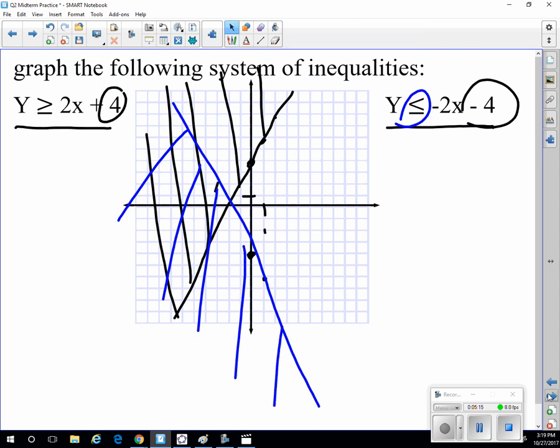So the places where they're both satisfied are in this region here, and it continues out beyond that, but that area satisfies this system of inequalities where it has to satisfy both the one and the other.